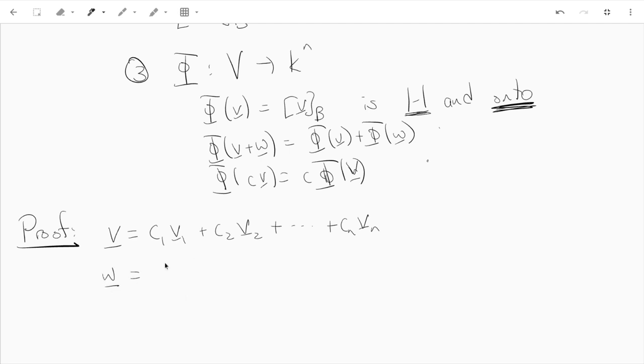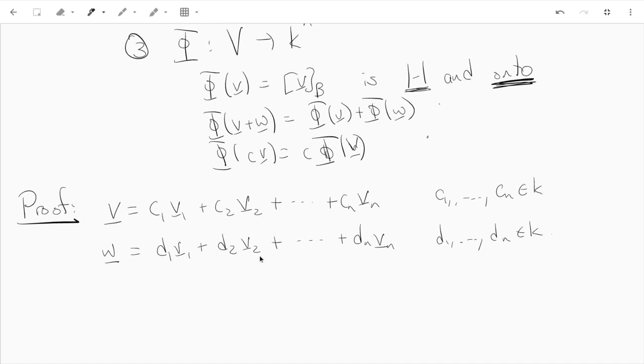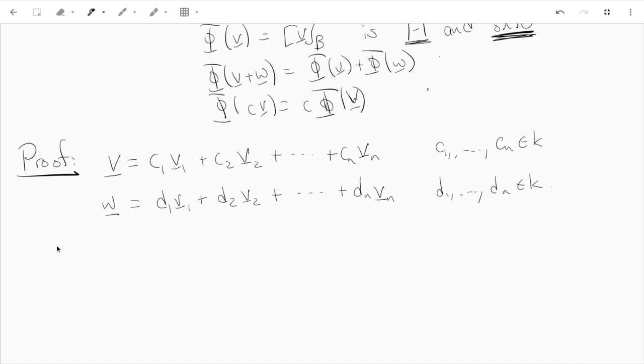And similarly we can make w a linear combination of the vi's, but maybe with different scalars. So here the cn's, the ci's and the di's live in the scalar field. And now to find the coordinates of v plus w, well we just take these two equations and add them up.